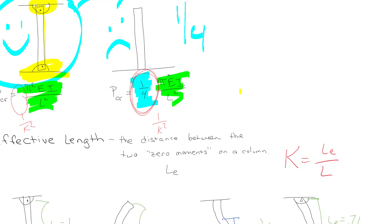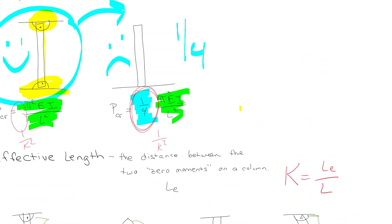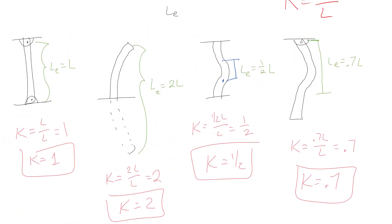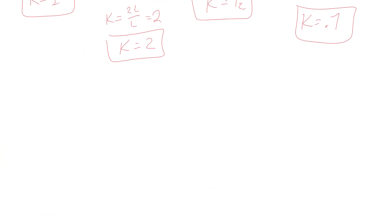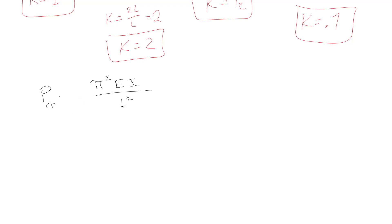In general, the critical load formula becomes π²EI over (kL)², incorporating the 1/k² factor. This means we can have a table of k values for different end conditions and apply them to move forward with design calculations.